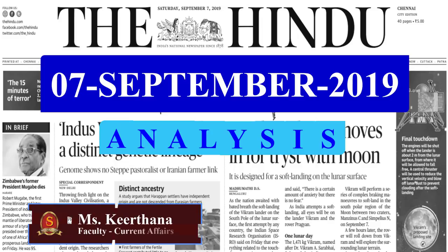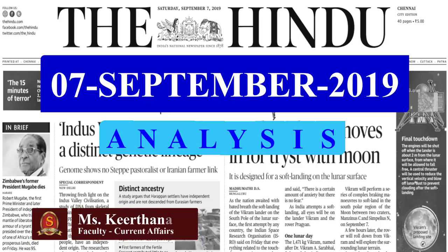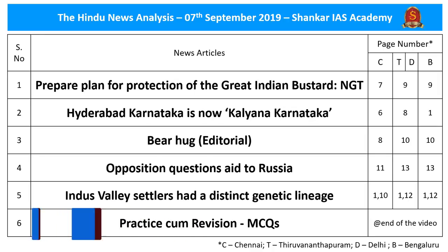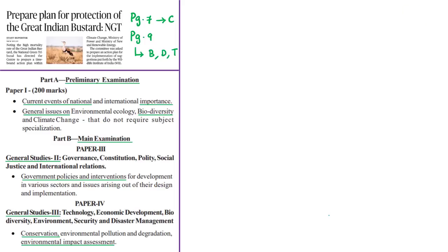Good evening aspirants, welcome to The Hindu News Analysis by Shankara IAS Academy. The list of articles chosen for today's analysis, along with the page numbers of Chennai, Bangalore, Delhi, and Thiruvananthapuram editions, are provided here. The link for the handwritten notes in PDF format and the time stamping for the displayed articles is given in the description box below. For the benefit of smartphone users, the time stamping is also given in the comments section. Let's move on to our first article analysis — the first news article is about the Great Indian Bustard.